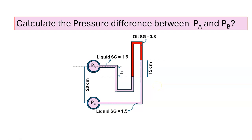Today I'll solve one fluid mechanics numerical problem on a U-tube manometer. A liquid with specific gravity 1.5 is flowing through two pipes: pipe A and pipe B. The center pressure of pipe A is PA and of pipe B is PB. The distance between the two pipe centers is 20 cm. The manometric liquid is oil with specific gravity 0.8, and the height of the manometric liquid is 15 cm. We have to calculate the pressure difference between PA and PB.